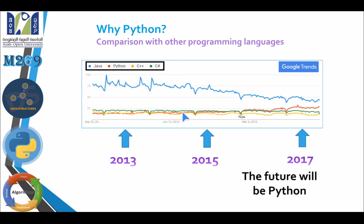In the coming few years, Python will likely be more popular than Java. Looking at the trend data, Java has been dropping since around 2016 while Python is trending upward and will continue to grow in the coming five years.